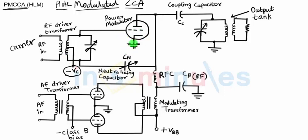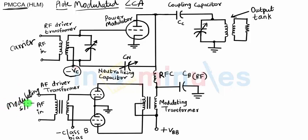The cathode terminal of the tube is at ground. Let us now look at the remaining part of the circuit. You can see our AF — AF stands for audio frequency signal, which is nothing but my modulating signal. The modulating signal enters the circuit through this side. The first circuit in this case is the power amplifier.